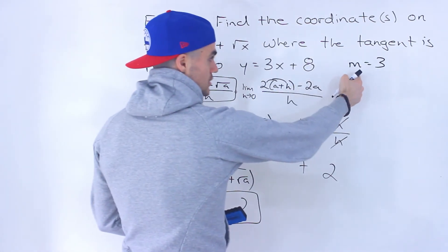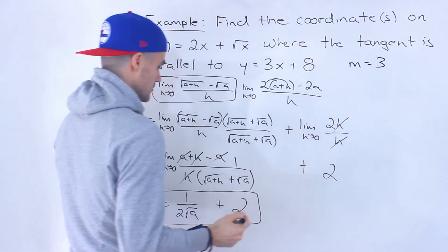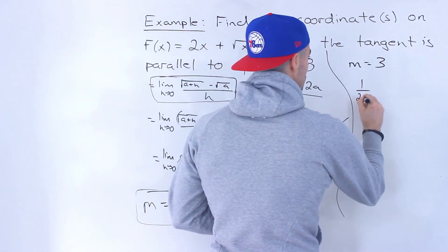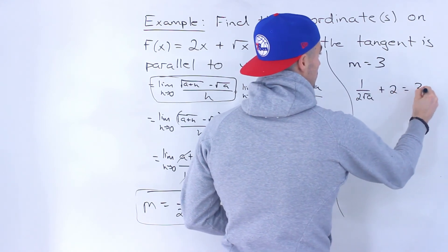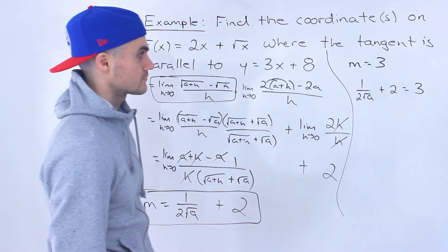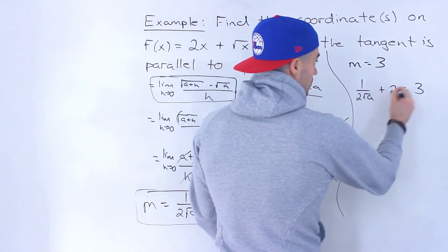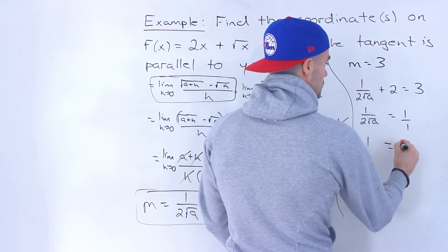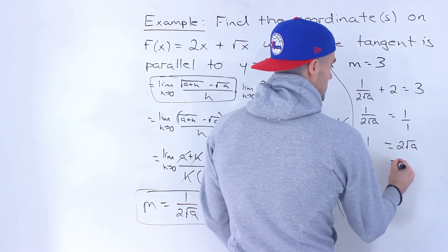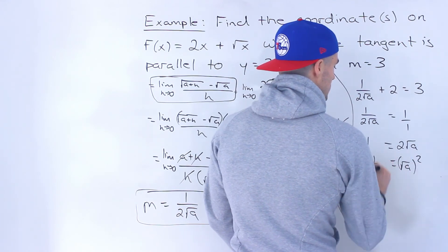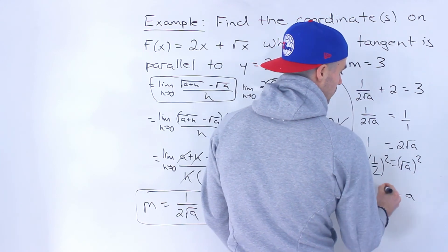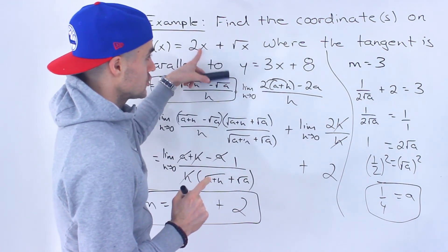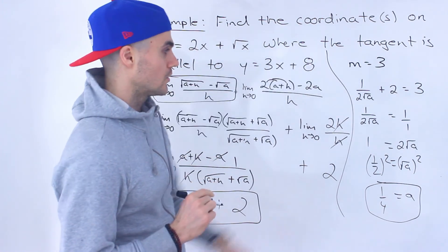We're already given the slope of the tangent — we're trying to find the x value where the slope equals 3. So we set 1 over 2 root a plus 2 equal to 3, bring the 2 over: 1 over 2 root a equals 1. Cross multiply: 2 root a equals 1. Divide both sides by 2, then square both sides to get rid of the square root, giving a equals 1 over 4. That's the x value where the slope of the tangent is going to be 3.